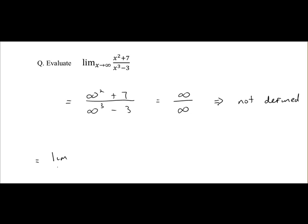In this particular one, the highest power of x is x cubed. So we are dividing above and below by x cubed. It is x squared divided by x cubed plus 7 divided by x cubed, all over x cubed divided by x cubed minus 3 divided by x cubed.